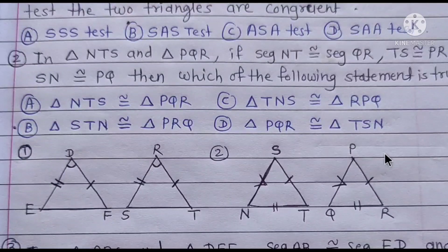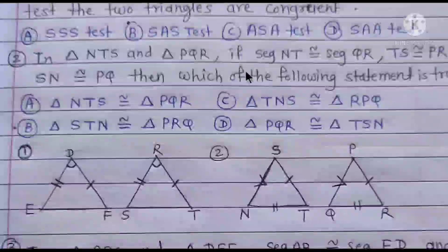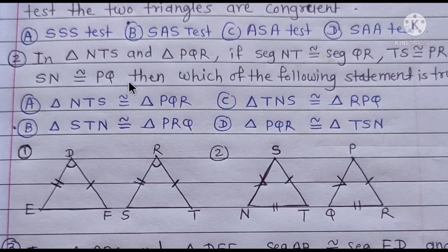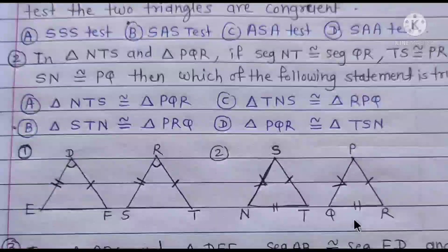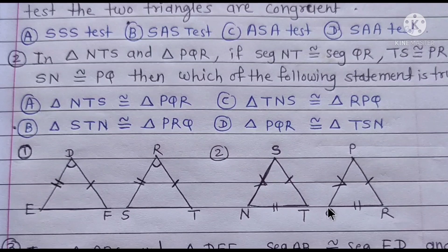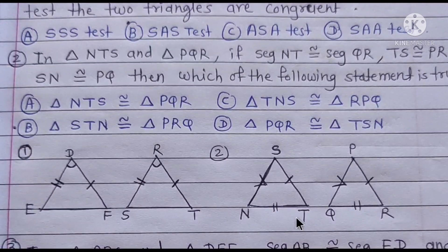Question 2: In triangle NTS and triangle PQR, if segment NT ≅ segment QR, TS ≅ PR, and SN ≅ PQ, then which of the following statements is true? In these two triangles, we have 3 sides congruent. Matching vertices: N↔Q, T↔R, S↔P gives triangle NTS ≅ triangle QRP.